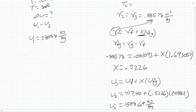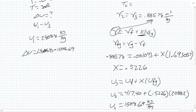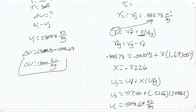So now we can find delta U = U1 − U3 = 2808.8 − 1508.69, which gives us a delta U of approximately 1300 kJ/kg. That is our change in internal energy.